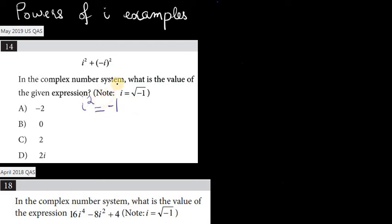And this is because the definition of i says, and they've also given it to us here, that i is equal to the square root of negative 1. So if you just square both sides, you'll find out that this is equal to negative 1.